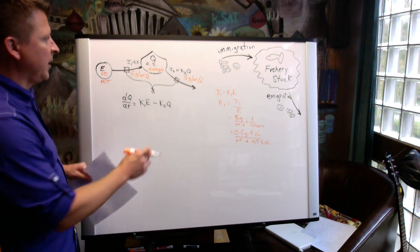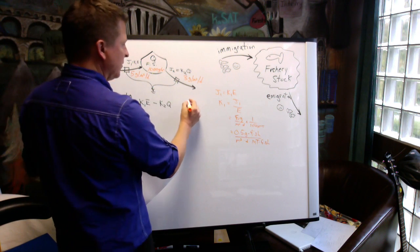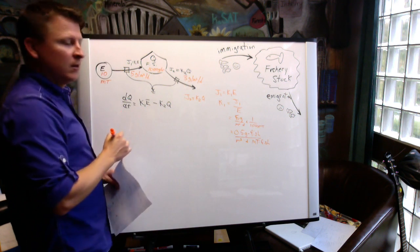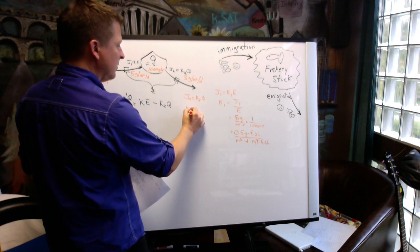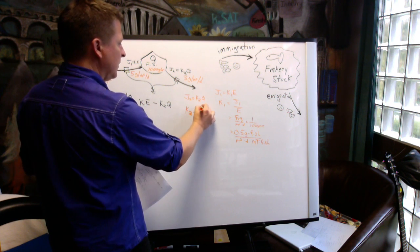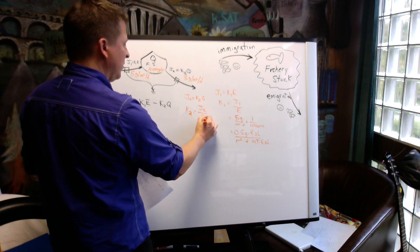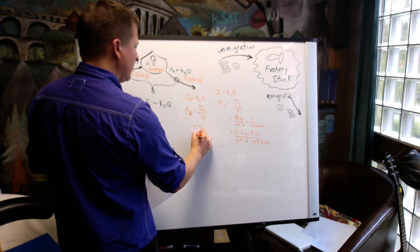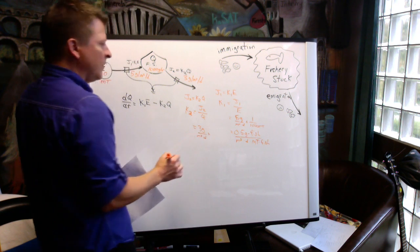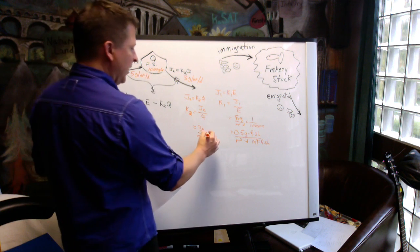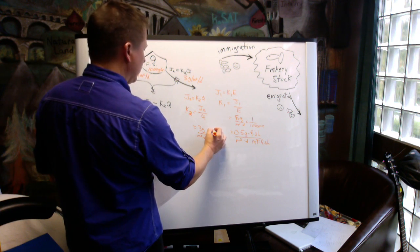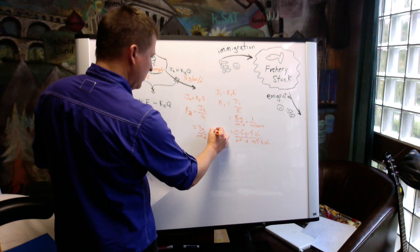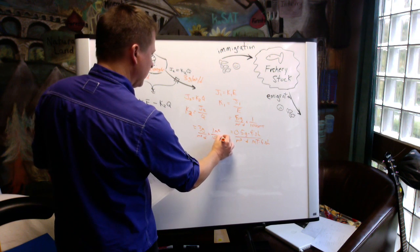We can do the same thing for J2. J2 equals K2 Q. Solve for K2. K2 is J2 over Q. J2 is 3 grams per square meter per day. And Q is 1,000 grams. So we're dividing by Q, so we'll get 1 per 1,000 grams per square meter.